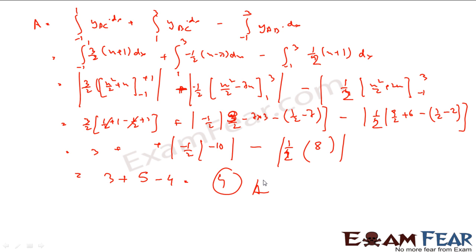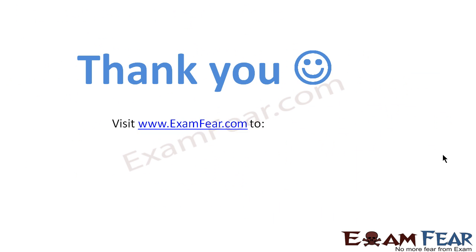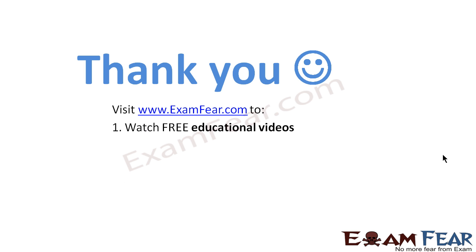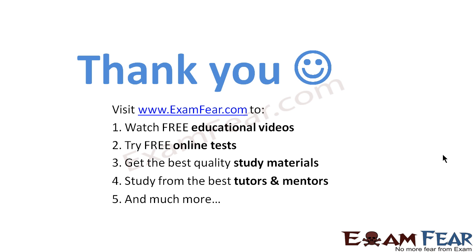So what I have done is nothing complicated. I knew the area of the triangle equals the area of the big region minus one part. I found the area by breaking it into two parts and integrating each line equation with respect to x, then subtracting the third. Thank you. Visit examfear.com to watch free educational videos, try free online tests, get the best quality study materials, and study from the best tutors and mentors.